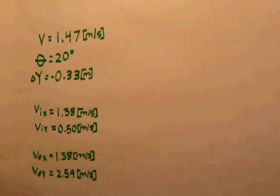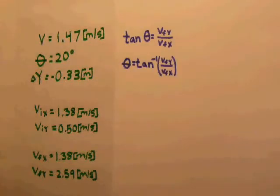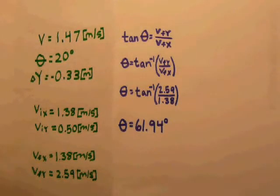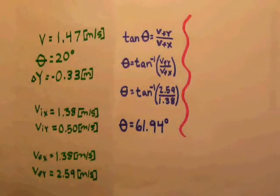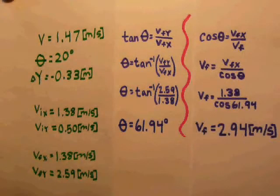We will use tangent to find the final angle and cosine to find the final velocity. Therefore, the final velocity is 2.94 meters per second at an angle of 61.94 degrees above the horizontal.